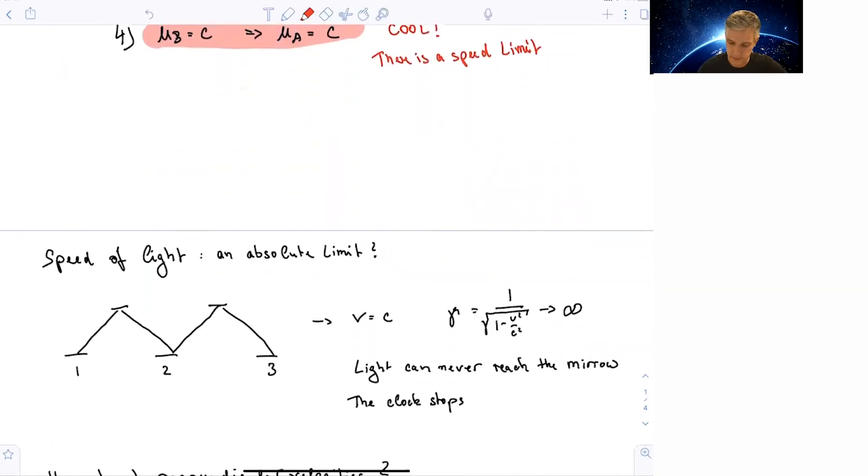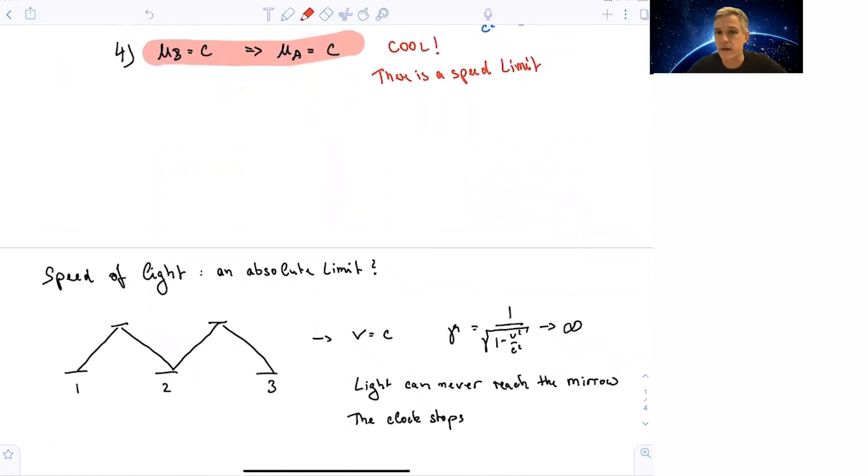Let's analyze this a little bit more in the context of our light clocks. What now happens if the velocity is equal to c is that gamma goes to infinite. And in the context of the light clock, you can notice that the upper mirror can never be reached. It's moving with the speed of light, the same velocity as the light itself. So if light is never able to reach this, the clock will stop. So there's an absolute limit of velocity as the speed of light.